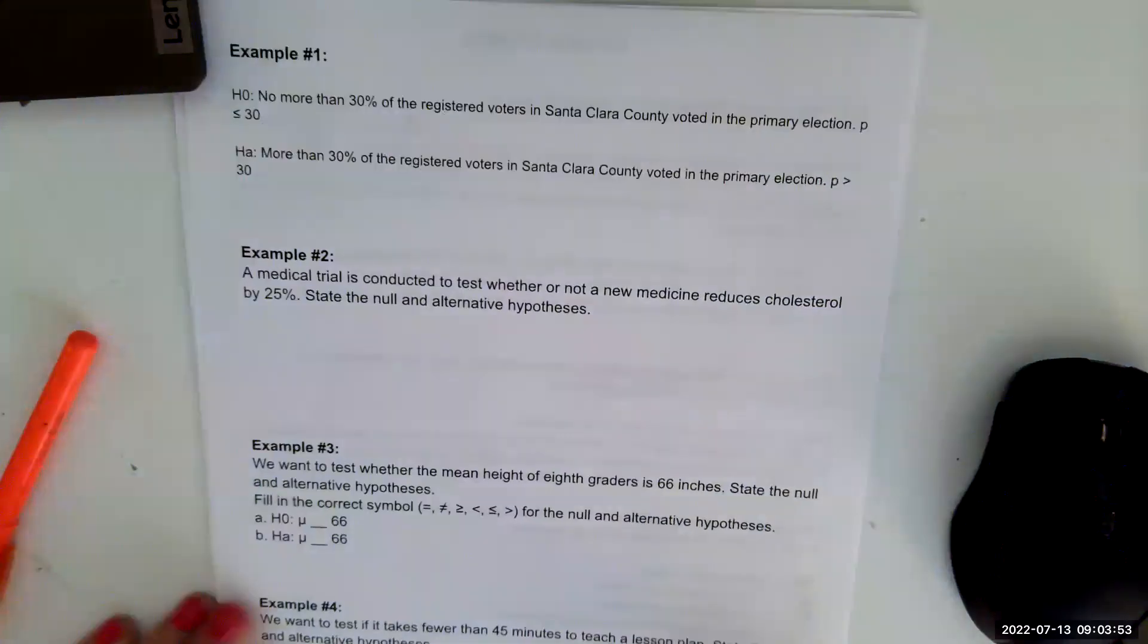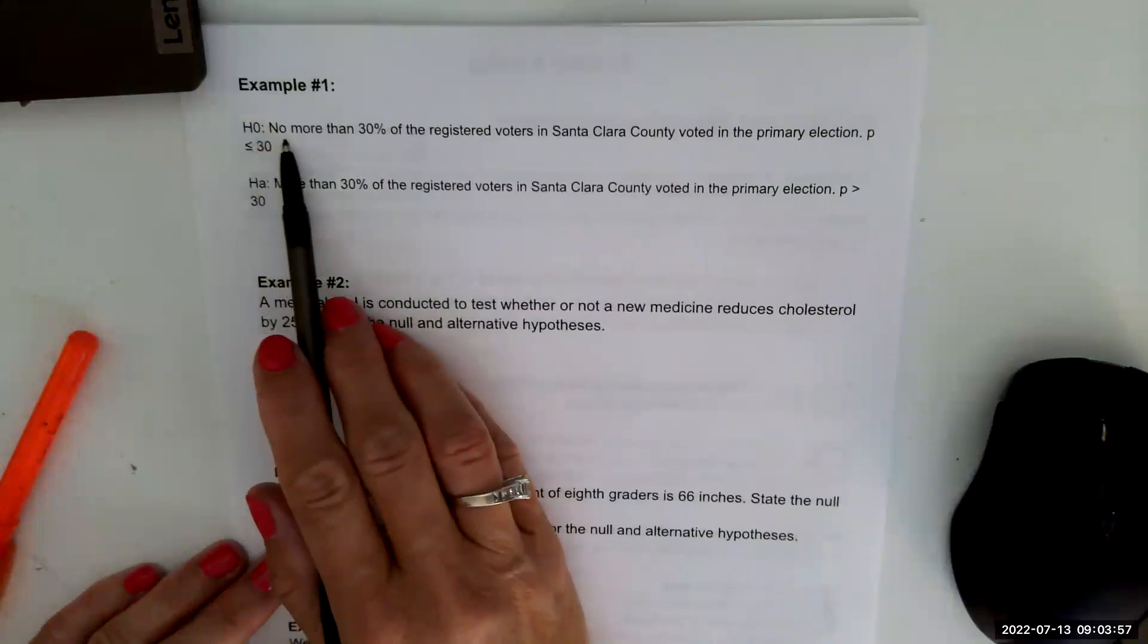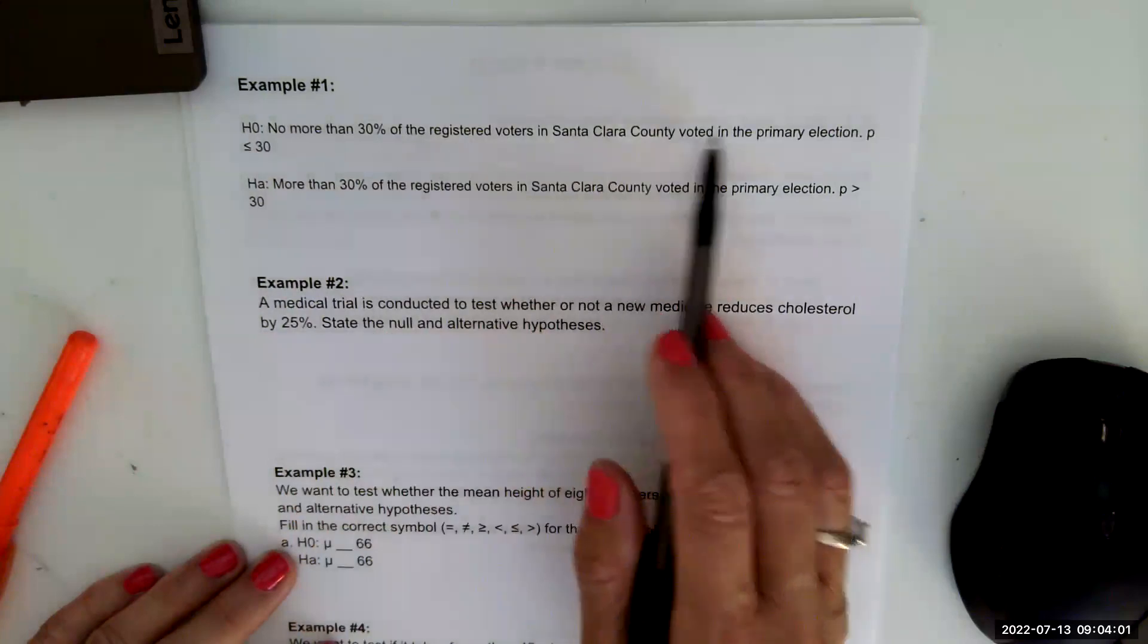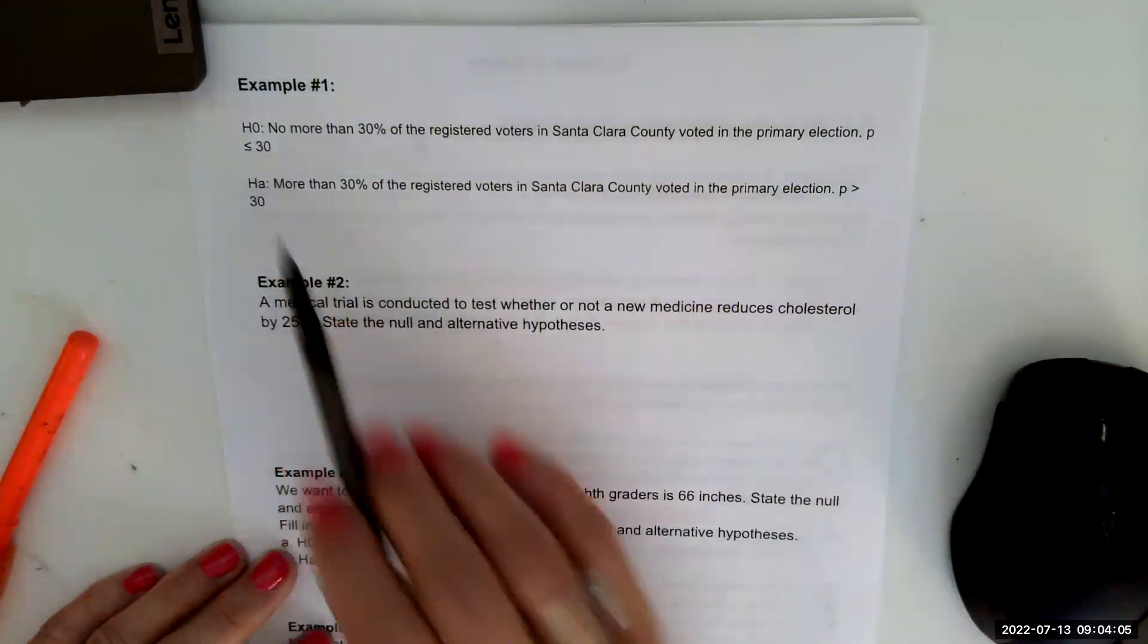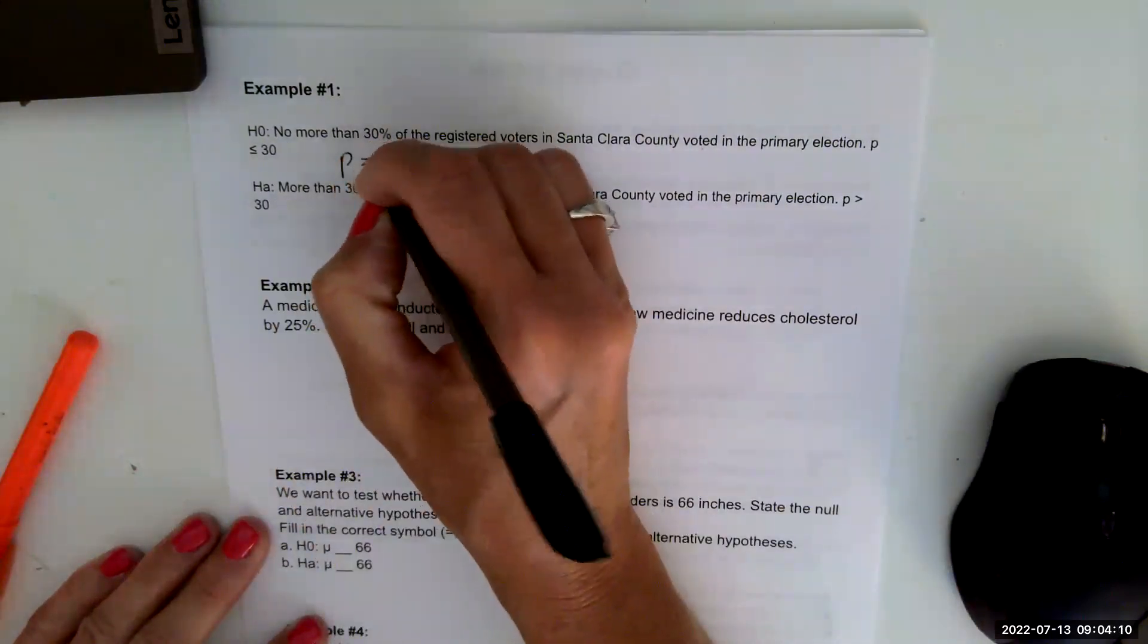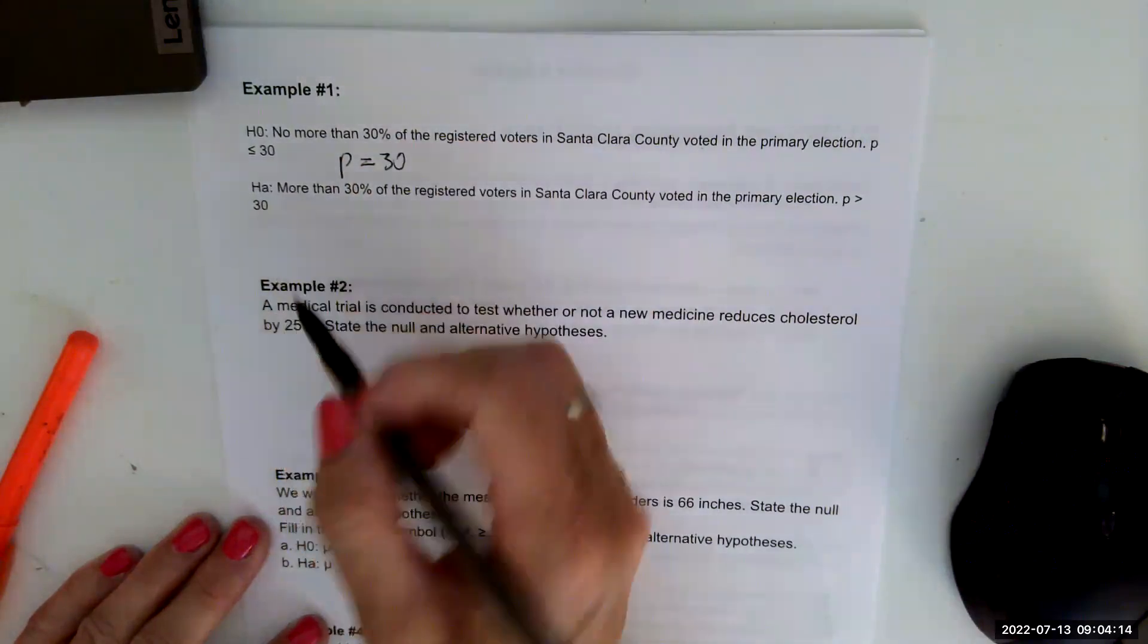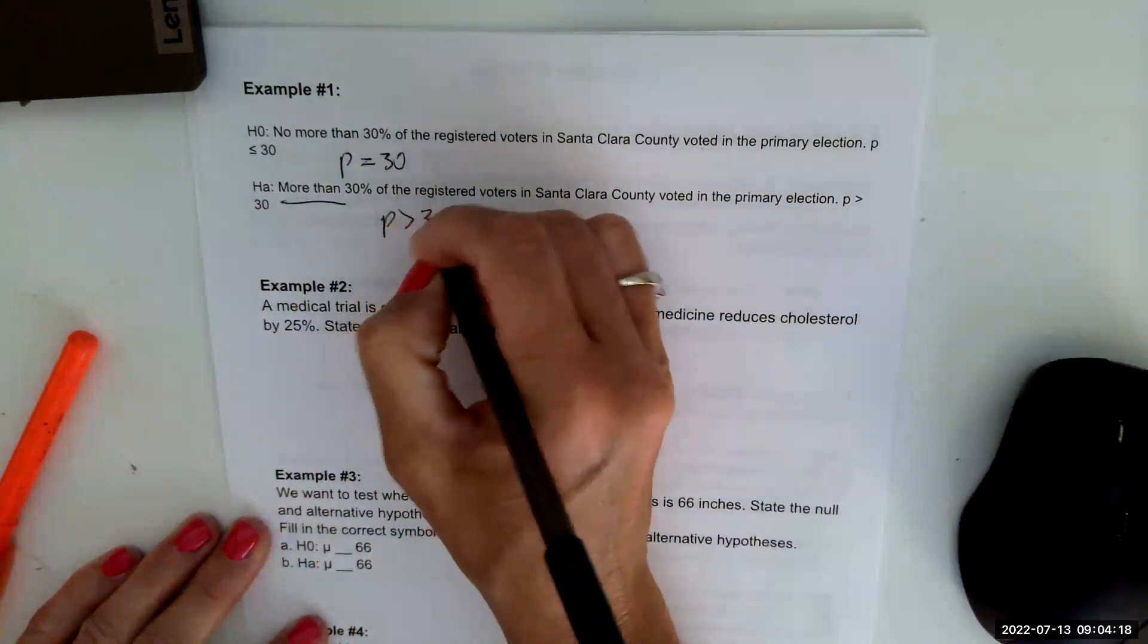Let's look at some examples on these pieces. Example one says, our null hypothesis says no more than 30% of the registered voters in Santa Clara County voted in the primary election. P is less than or equal to 30%. Now really, in the H0, we are only going to have an equal to. The alternative tells us that we're testing more than. That's the more than 30.